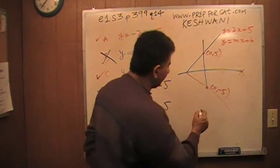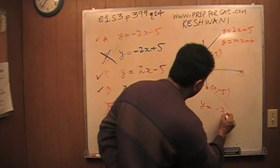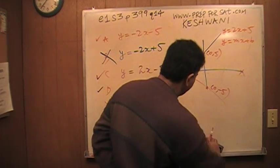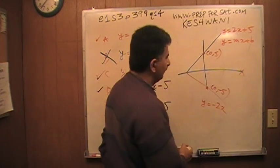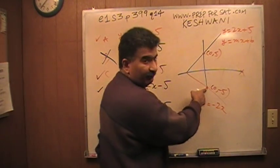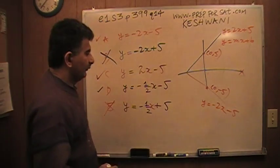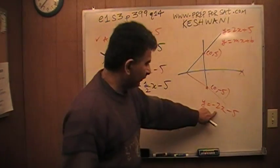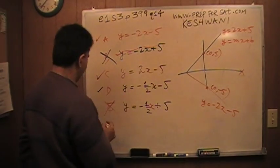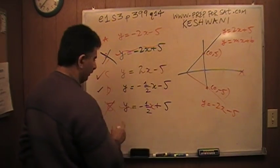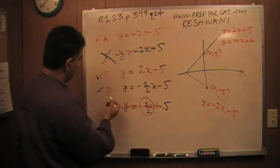This is the slope. I hope you know y = mx + b is the standard form of the equation and m is used to represent the slope. The slope in this case is positive 2. Therefore the slope of this line has to be negative 2. This guy was already gone because it has a slope of one-half. This guy is no good.